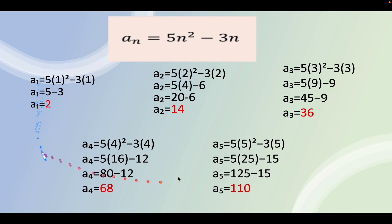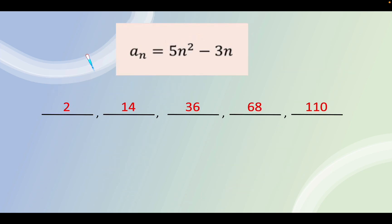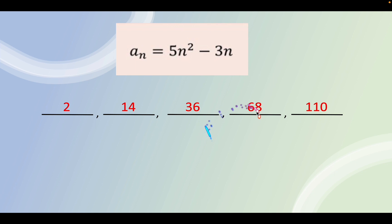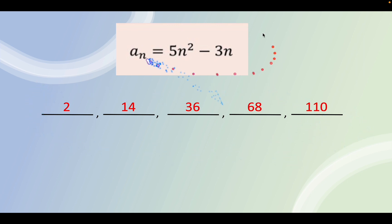We have now found all the first five terms of the sequence. The answers for the formula a sub n equals 5n squared minus 3n are 2, 14, 36, 68, and 110. These are the first five terms of the sequence for this formula.